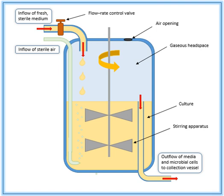However, the higher the number of cells becomes, the more nutrient is consumed, lowering the concentration of the limiting nutrient. In turn, this will reduce the specific growth rate of the cells, which will lead to a decline in the number of cells as they keep being removed from the system with the outflow. This results in a steady state.